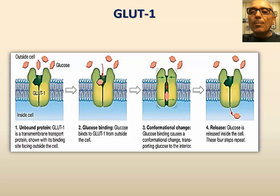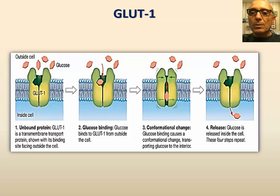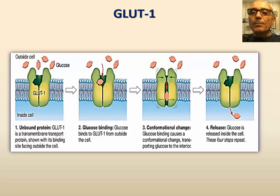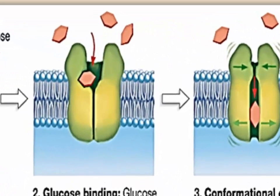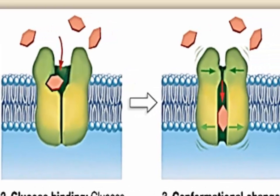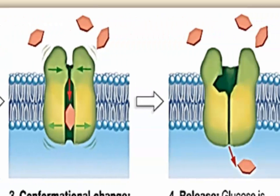Let's look at an example of carrier proteins — that of GLUT1. GLUT1 is an integral membrane protein that allows glucose to diffuse in both directions across the membrane based on its concentration gradient. GLU in GLUT1 refers to glucose, and the T to transport. Depending on which side glucose is more concentrated, glucose molecules bind to the protein, causing a change in the protein configuration that translocates the glucose molecule to the other side of the membrane.